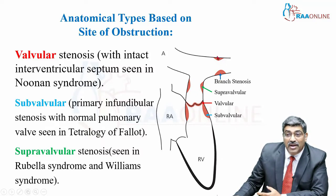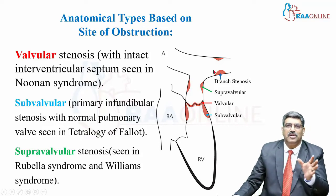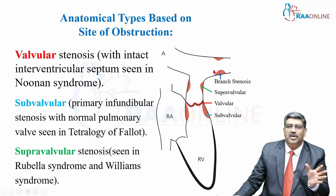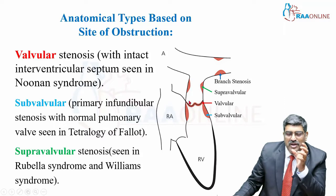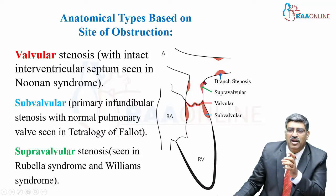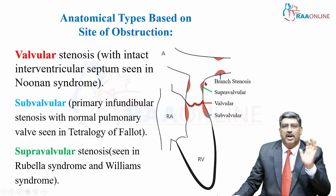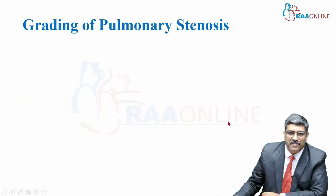Pulmonary artery branch stenosis can also occur. Overall, when we talk about pulmonary stenosis, we classify it as valvular, subvalvular, or supravalvular pulmonary stenosis.